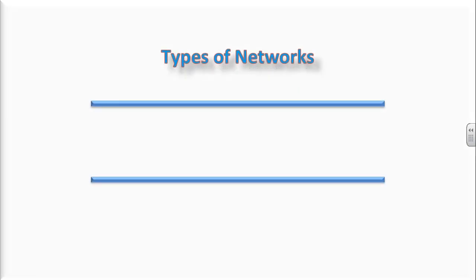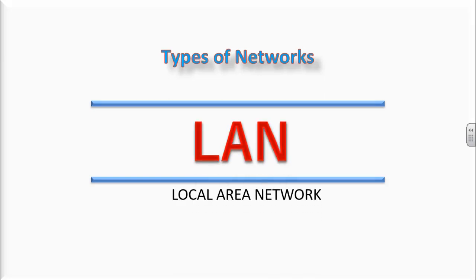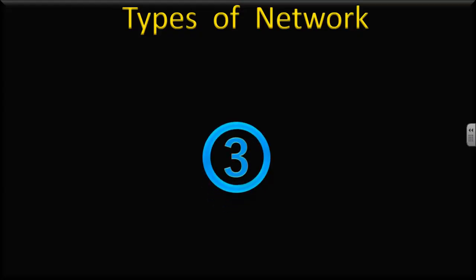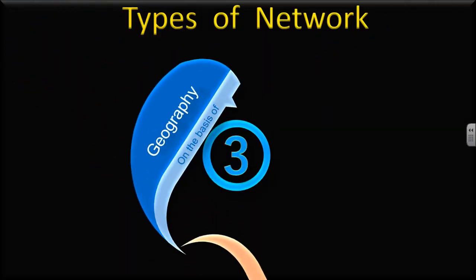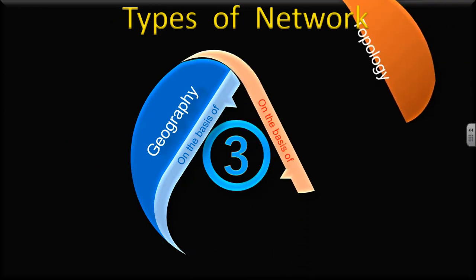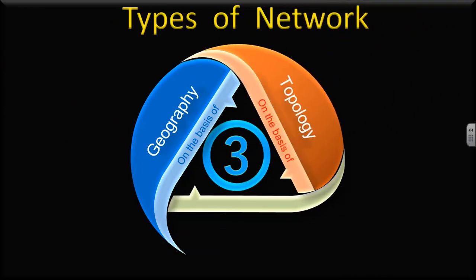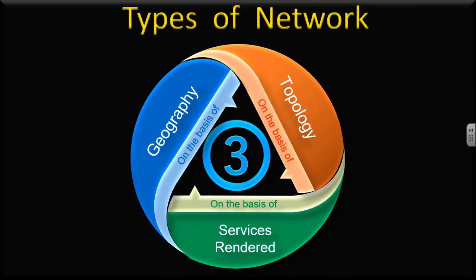Welcome to my class. In this class, we will talk about types of networks. There are different types of networks and all these types can be divided into three parts: one is on the basis of geography, second is on the basis of topology, and the third one is on the basis of services rendered.